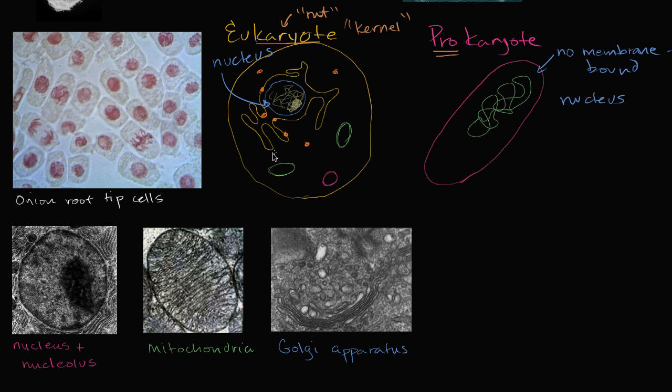But that's not all. Eukaryotes will also have other membrane-bound structures that you will not see in prokaryotes. For example, you will tend to see mitochondria, mitochondria in a eukaryotic cell, both plant and animal cells, but you won't see it in a prokaryotic cell.